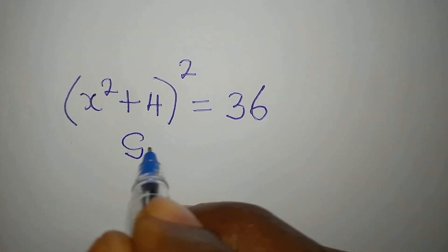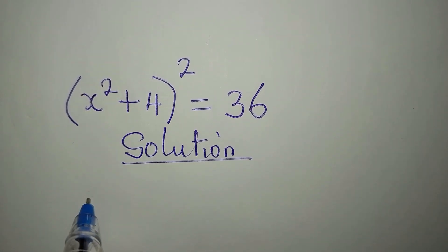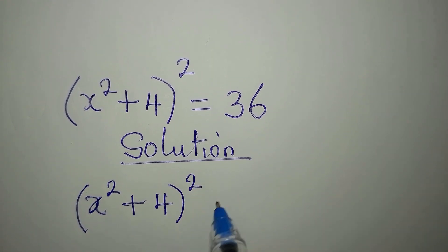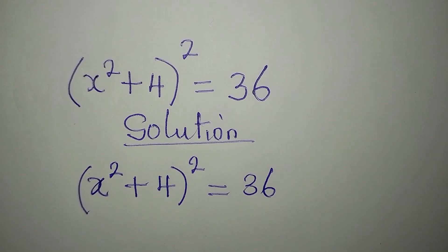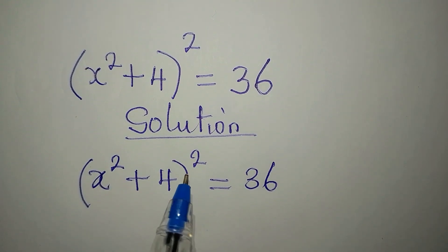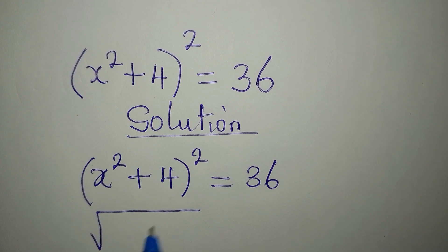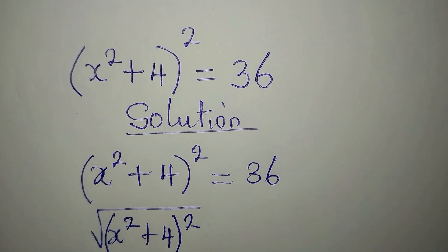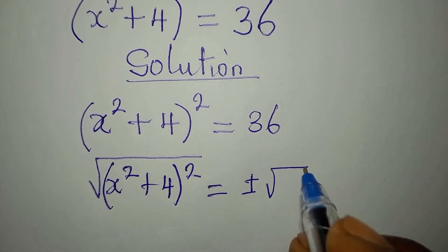Hello everyone, let's provide the solution to this problem: (x squared plus 4) to the power of 2 equals 36. The first thing we want to do is take the square root of both sides. So we take the square root of x squared plus 4, which was raised to the power of 2, and on the other side we have plus or minus the square root of 36.